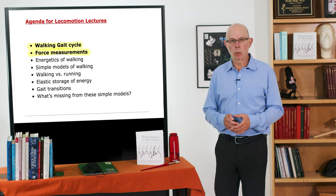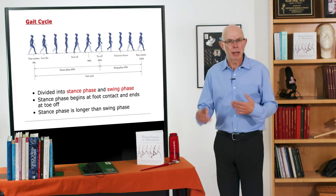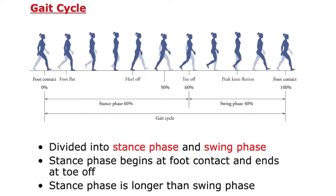Walking is a cyclic event. We take a step and then another step and cycle through walking in that way. It's very useful to define a walking gait cycle. The gait cycle begins at foot contact — 0% of the gait cycle — and ends at the next foot contact again. You see the right leg contacting the foot once, then again, and that's what we call the gait cycle. It just repeats over and over.